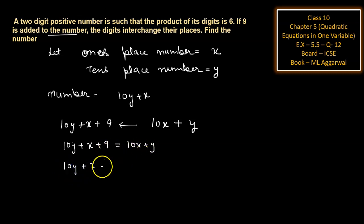10y plus x plus 9 shifted to other side, and 10x plus y is shifted to left-hand side with opposite signs, is equal to minus 9. 10y minus y is 9y, and x minus 10x is minus 9x, is equal to minus 9.